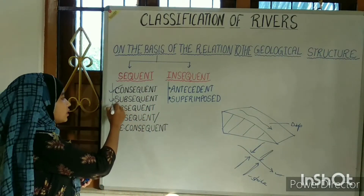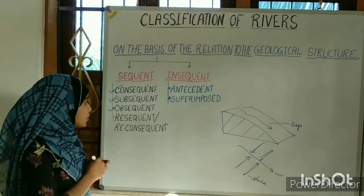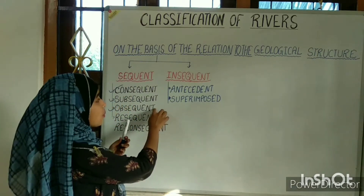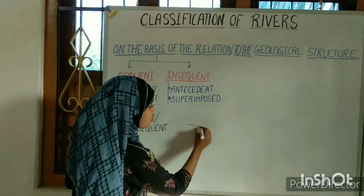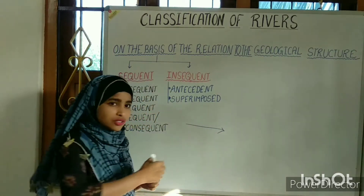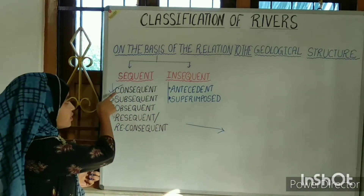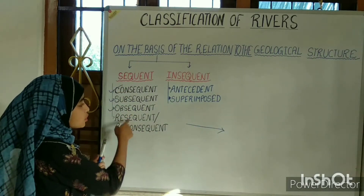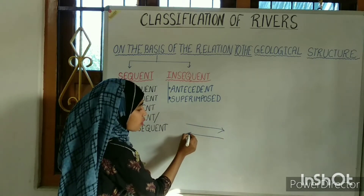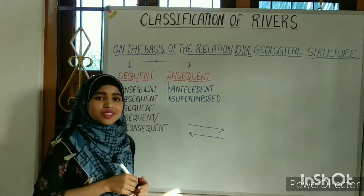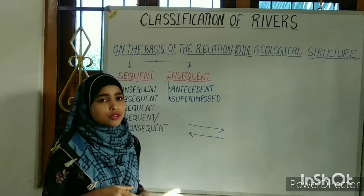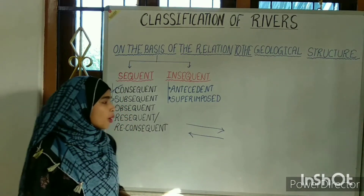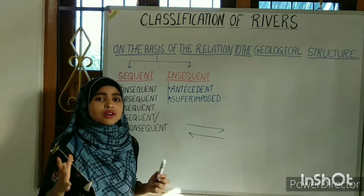Now moving on to the third type — the obsequent river. The obsequent river flows in just the opposite direction of the consequent river. The consequent streams flow in one direction, and the obsequent streams flow in just the opposite direction of the consequent streams. That is the main difference. And the best example of obsequent streams is the river Potion.